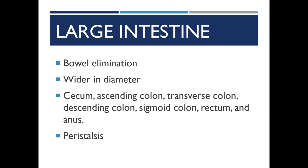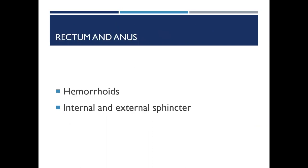Waste from the body is eliminated through the formation of feces and expelled by way of the rectum and anus. The rectum is the final portion of the large intestine, approximately 4 to 6 inches in length. At the distal portion lies the anus, which is 1 to 2 inches. The rectum has folds of tissue that temporarily hold fecal contents. Each fold contains an artery and vein that can become distended from pressure during straining, and this distension may result in hemorrhoid formation. The anal canal contains an internal and external sphincter, each controlled by the sympathetic and parasympathetic nervous system.